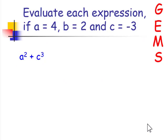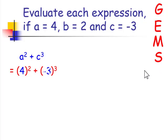Let's evaluate. When we see the expression a squared plus c cubed, the first thing you should do is write it with parentheses. Now let's see what the value of a is — that value is 4. And the value of c is negative 3. We'll place 4 in for a and replace c with negative 3, but always within those parentheses.